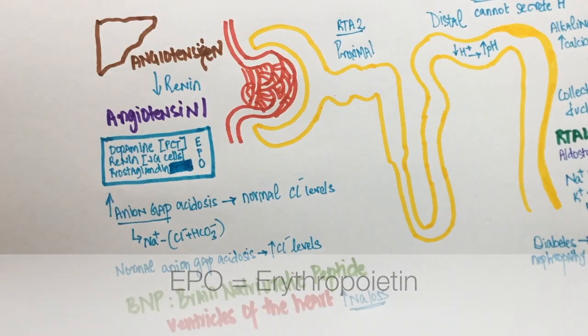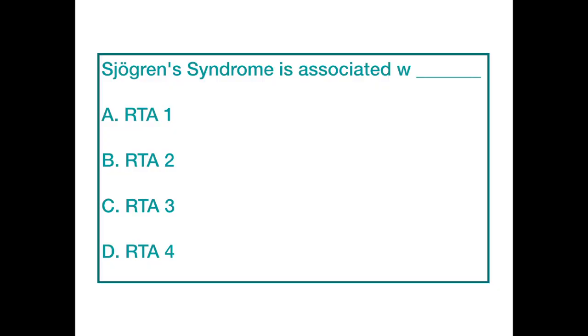Question number seven. Sjögren's syndrome causes which type of renal tubular acidosis? Option A: Type 1. Option B: Type 2. Option C: Type 3. Option D: Type 4.